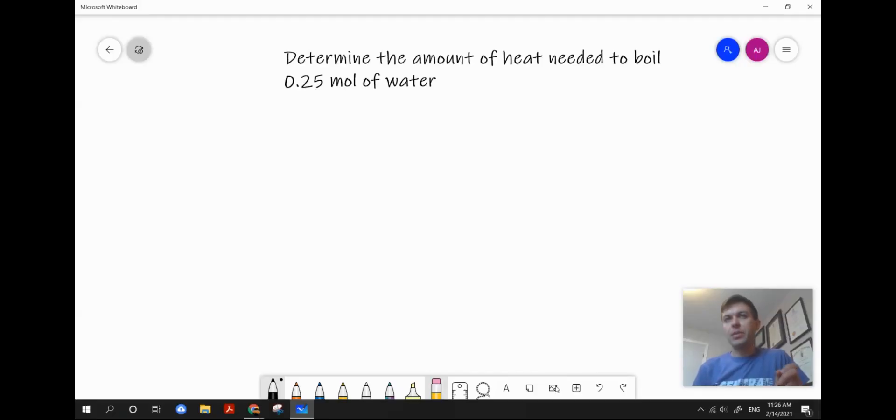Our first example is this. Determine the amount of heat needed to boil 0.25 moles of water. So we're talking about the process of going from liquid to gas, which is vaporization. So let's write out our givens.